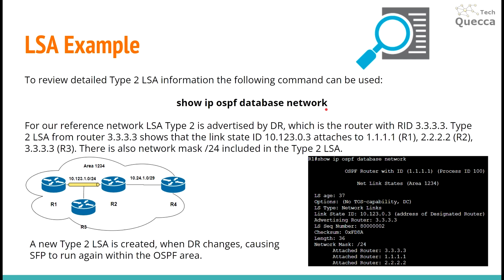For our reference topology, network LSA Type 2 is advertised by the DR. The DR is our router R3. Type 2 LSA from router 3333 shows that link state ID 10.123.0.3 is attached to R1, R2, and R3. There is also a network mask /24 included in the Type 2 LSA.